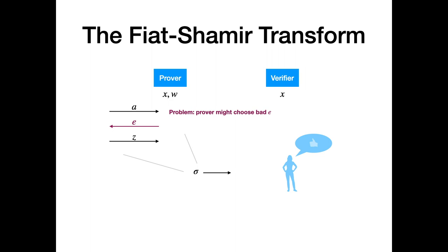There is a problem: the underlying interactive protocol assumes the verifier's message e is uniformly random, and soundness is only guaranteed if this is true. It could be possible that there are bad e's the prover could choose to produce an accepting transcript for an x not in the language. So we can't let the prover have so much freedom in choosing e. The classical fix is to have both prover and verifier access a public hash function — using the CRS as a description of the hash function — and require the prover to choose e by hashing their first message a. The verifier then checks that the prover computed their message correctly.